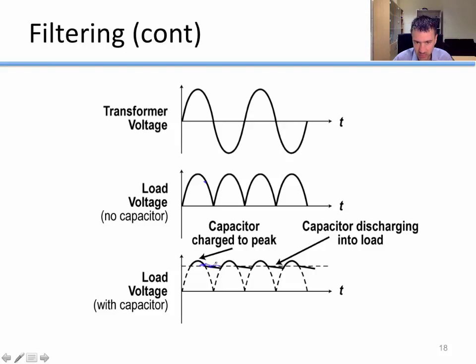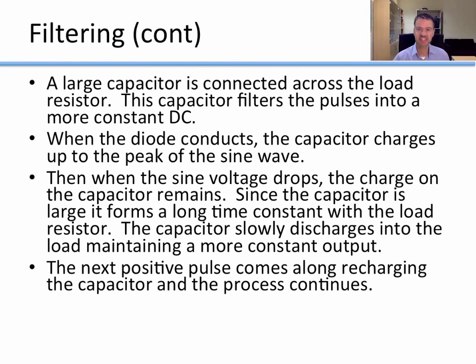It still drops a little bit. Then when the voltage goes back up again, it recharges. Moves back down, discharges. Recharges, discharges, recharges, discharges. We use this large capacitor across the load because it filters those pulses into a more constant DC.